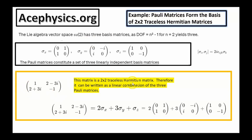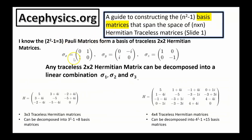As an example, a 2-by-2 traceless Hermitian matrix can be written as a linear combination of the three Pauli matrices. For instance, a matrix can be decomposed into 2σx + 3σy + σz. A 3-by-3 traceless Hermitian matrix can be decomposed into eight linearly independent basis matrices, and a 4-by-4 traceless Hermitian matrix has 15 basis matrices.